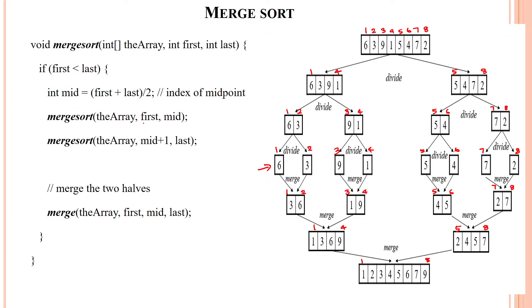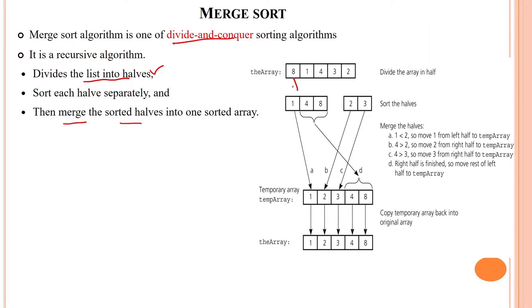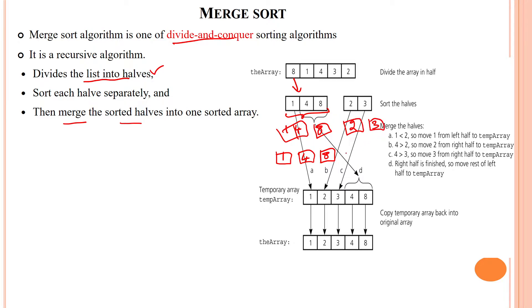The given list is divided into two halves. This half is again divided — 4 is one sublist and 8 into another sublist. Then 1 will be one sublist and 4 will be one sublist. 8 is already partitioned. Like that, 2 also will be partitioned separately. 3 also will be partitioned separately.